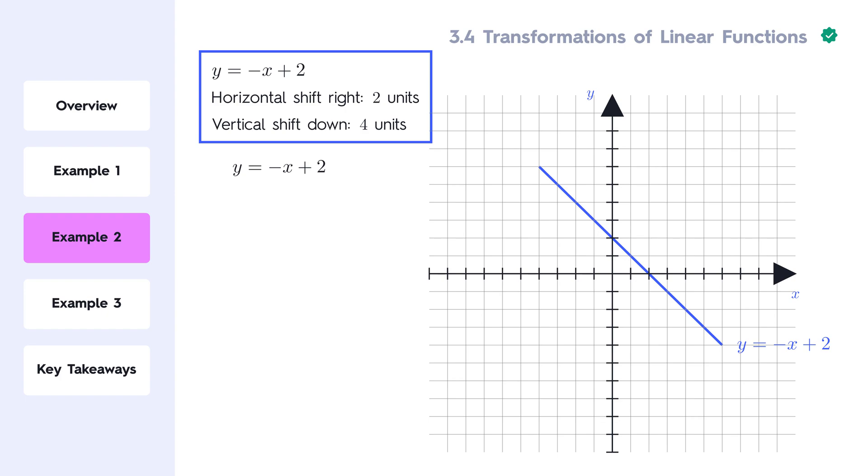A horizontal shift means we will add or subtract a constant inside the function. Since we're shifting the graph 2 units right, we subtract 2 inside the function.